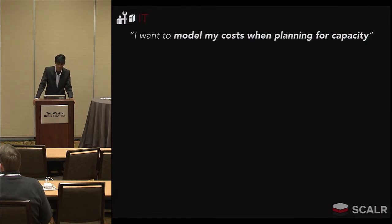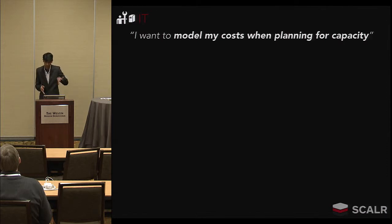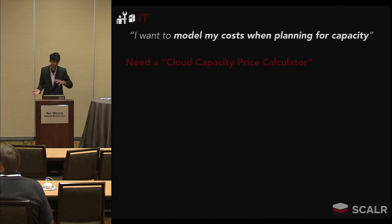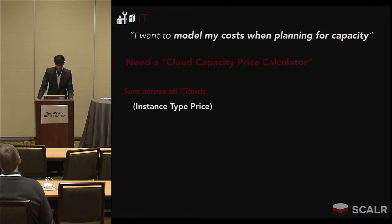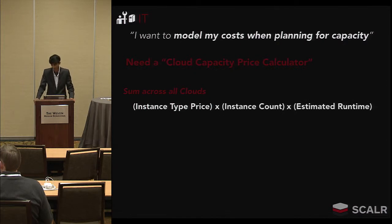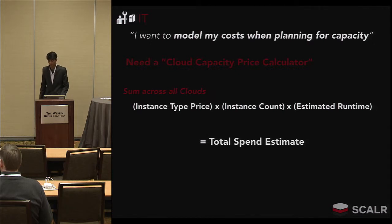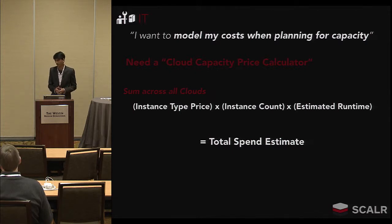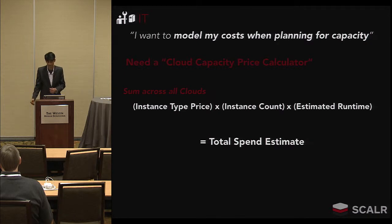IT also wants to model costs to plan for capacity. Using the spending patterns identified with the previous tooling, they need a calculator to estimate future spend. The cloud capacity price calculator works by summing across all clouds: instance-type price × instance count × estimated runtime = total spend estimate. For example, if you want to buy new CloudStack hardware, look at your usage patterns — if you use a lot of large servers, it makes sense to buy that many for next quarter. You can also take into account reserved instances and spot instances if using public pricing.